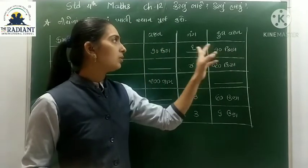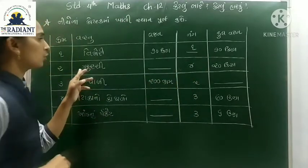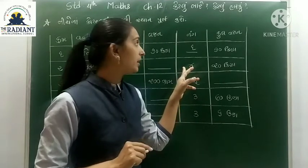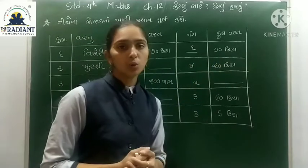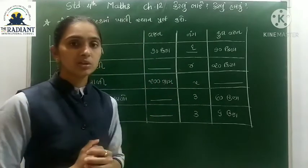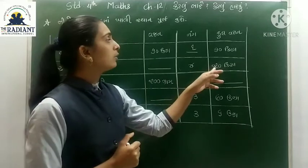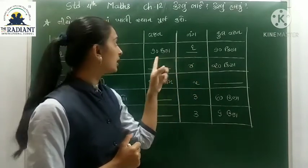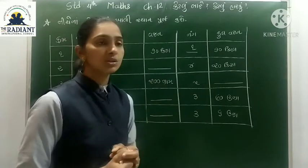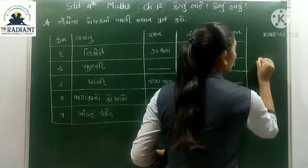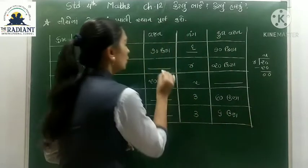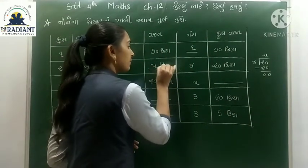ખુરશી — ત્યાં 4 ખુરશી આપેલી છે, અને કુલ વજન 20 kg આવ્યું છે. 4 ખુરશી છે, તો 1 ખુરશી નું વજન શોધવાનું છે. આ માટે 20 ÷ 4 = 5. ચાર પાંચ વીસ, જીરો — 1 ખુરશી નું વજન 5 કિલોગ્રામ.